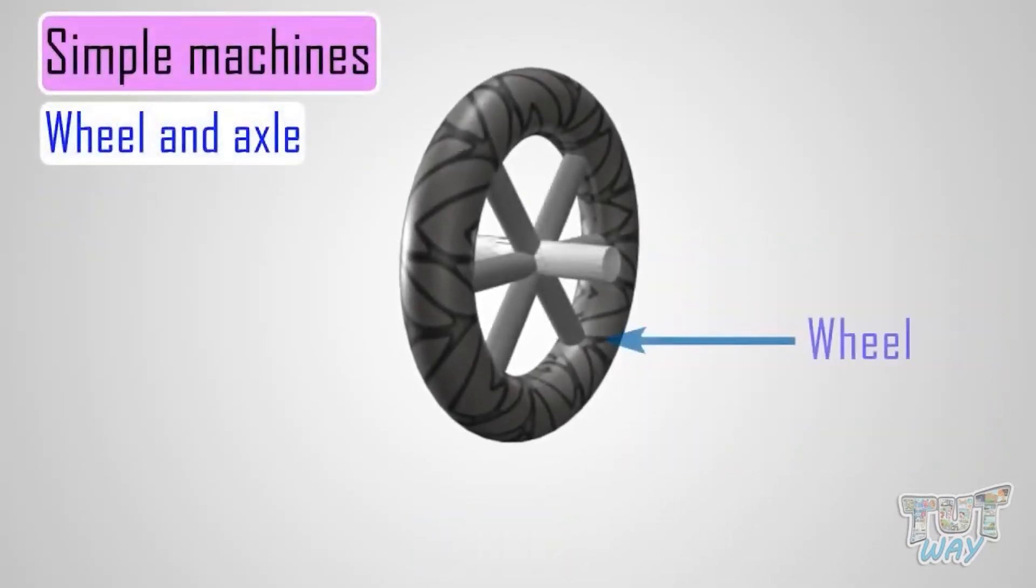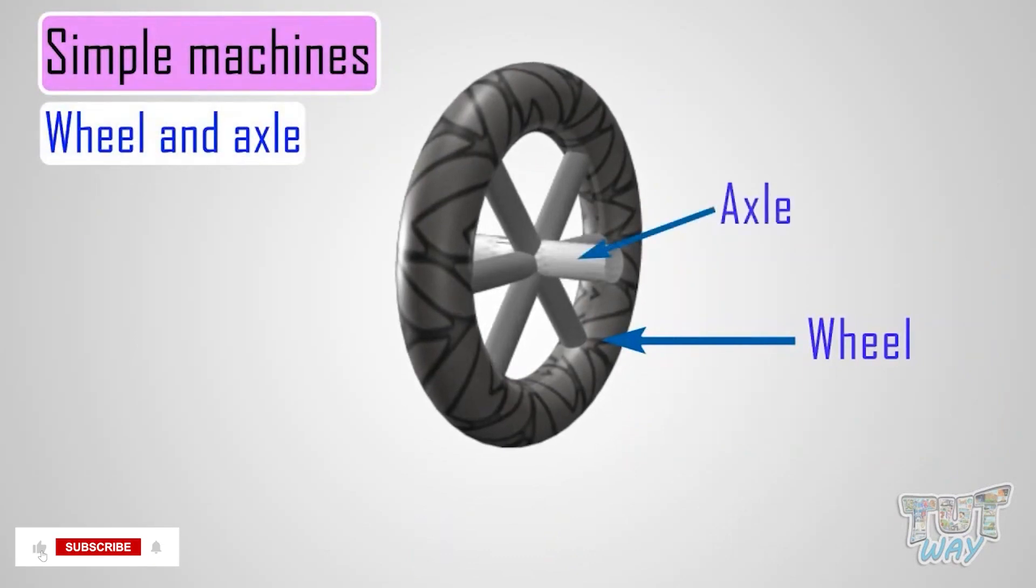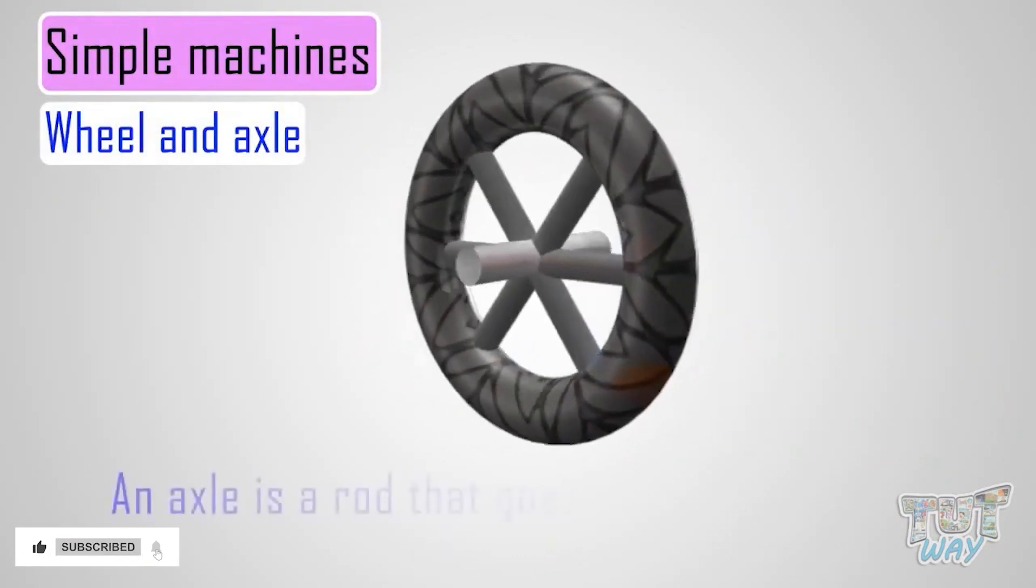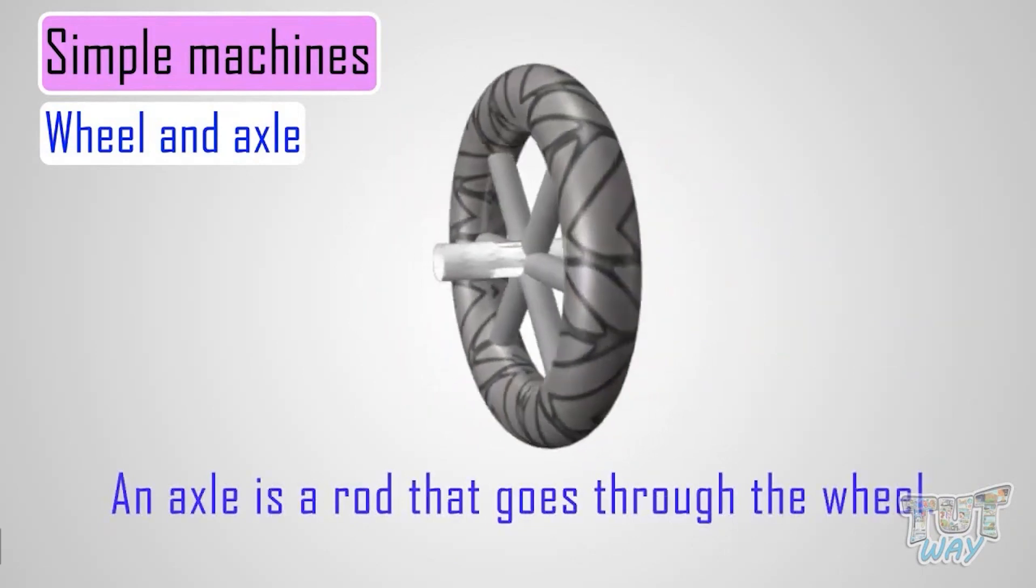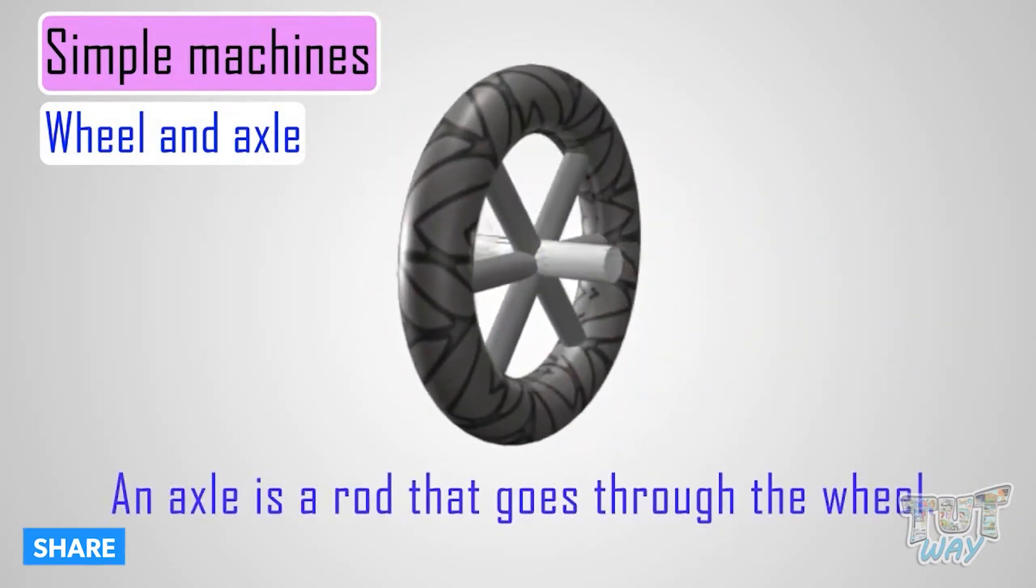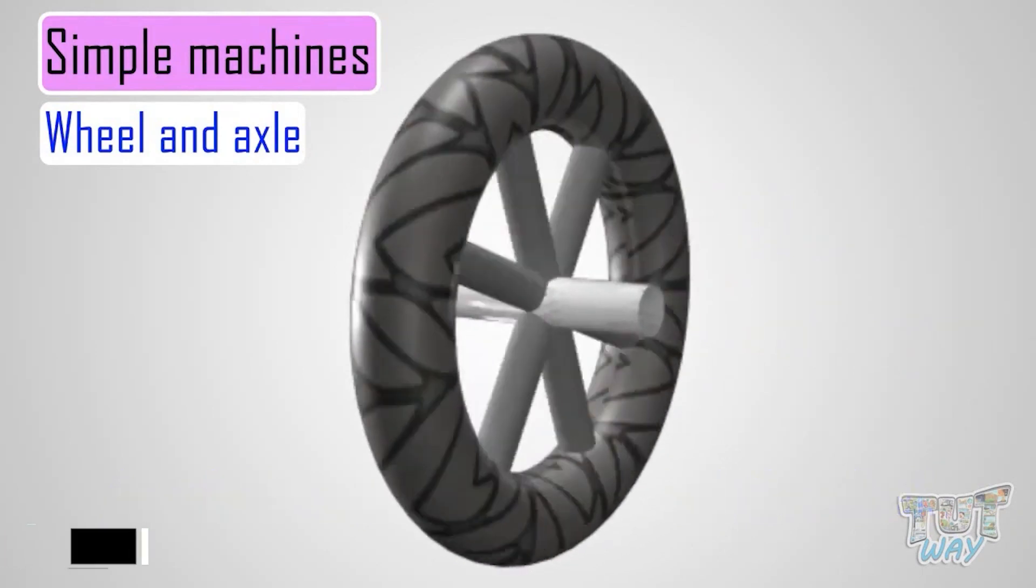This is a wheel attached to an axle, and the axle is a rod that goes through the wheel. This lets the wheel turn.